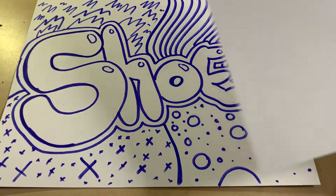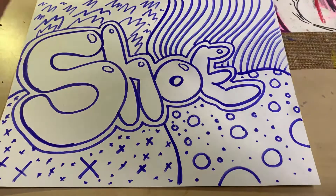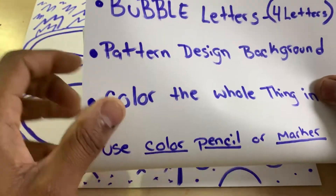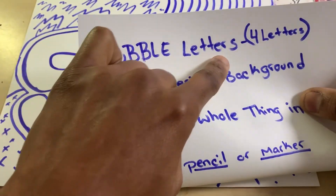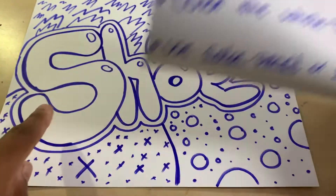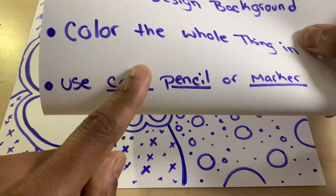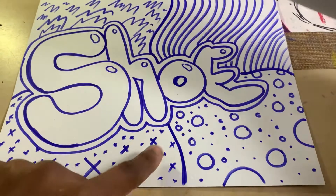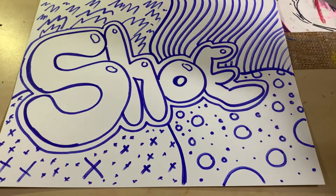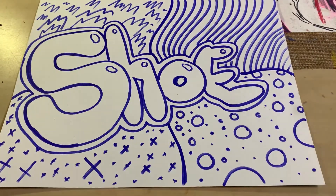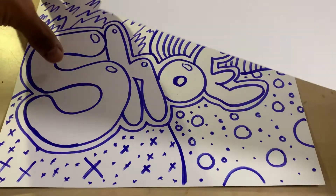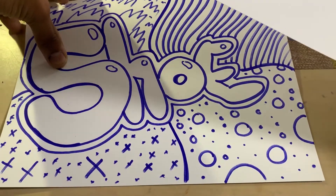So here's the list: bubble letters, four or more letters — one, two, three, four. Pattern and design in the background — that's the pattern in the background. Color the whole thing in. I didn't color the whole thing in because I didn't have time. Make sure you're using color pencils or markers. You can see I got a marker, but I just didn't color it all the way.